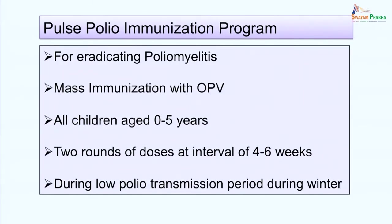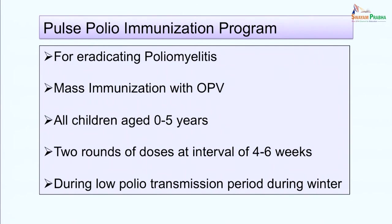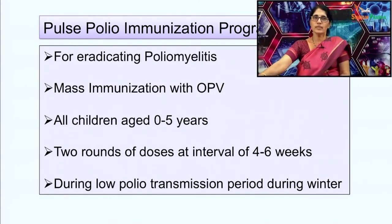To eradicate poliomyelitis from India, the Government of India started the Pulse Polio Immunization Initiative. Under this program, mass immunization of children between 0 and 5 years of age is carried out with oral polio vaccine. All children, regardless of their immunization status, are given 2 rounds of doses at intervals of 4 to 6 weeks. This program is carried out during the low polio transmission period, that is, during winter.